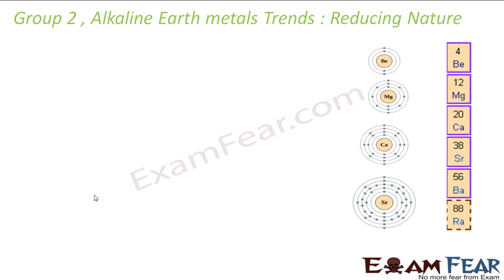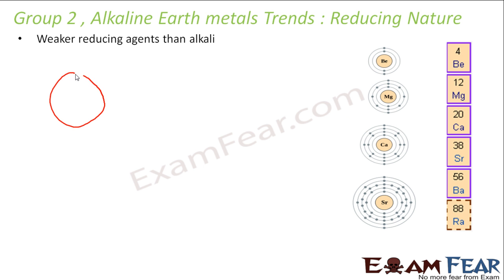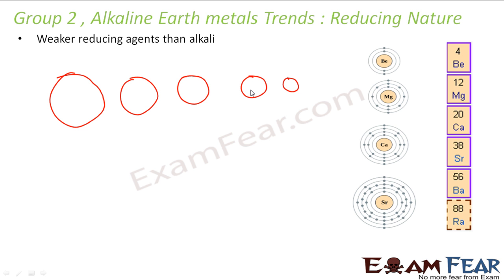Let us talk about the reducing nature. Going down the alkaline earth metal group, it follows the same trend: the size increases, so the metal can oxidize more easily, and the reducing nature also increases. But if you compare with alkali metals, the alkaline earth metals are weaker reducing agents. For example, sodium is bigger than magnesium. Since magnesium is smaller, it does not lose electrons as easily as sodium, so it will not oxidize itself as easily and is thus a weaker reducing agent.